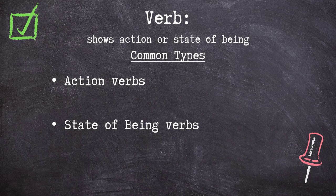So what kind of work do verbs do? Verbs are a part of speech that shows action or a state of being. Today, we'll look at verbs through two general categories of work: those that show action — action verbs — and those that discuss states of being — state of being verbs.